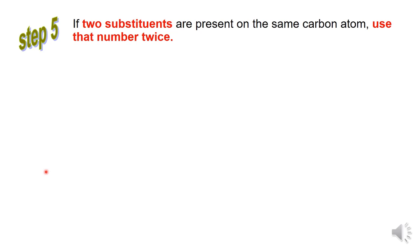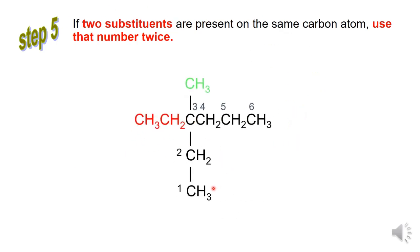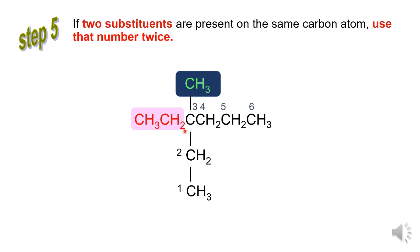Step 5: If two substituents are present on the same carbon atom, use that number twice. Example: this structure has the longest carbon chain of 6 carbons; the parent name is hexane. This structure has two substituent groups bonded to the same carbon atom — one is CH3, called methyl, and another is CH2CH3, called ethyl — both bonded to carbon number 3. So the IUPAC name is 3-ethyl-3-methyl-hexane.